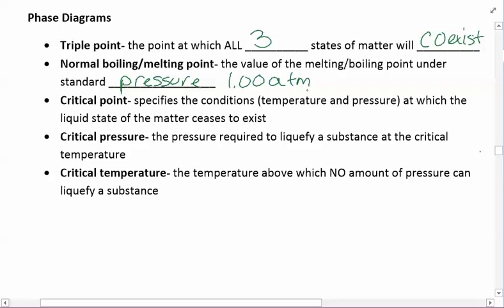The critical point specifies the conditions, the temperature and pressure, where the liquid state of matter ceases to exist. At a certain point you can no longer have a liquid and that's beyond the critical point. The critical pressure and critical temperature are the points related to that on your graph.